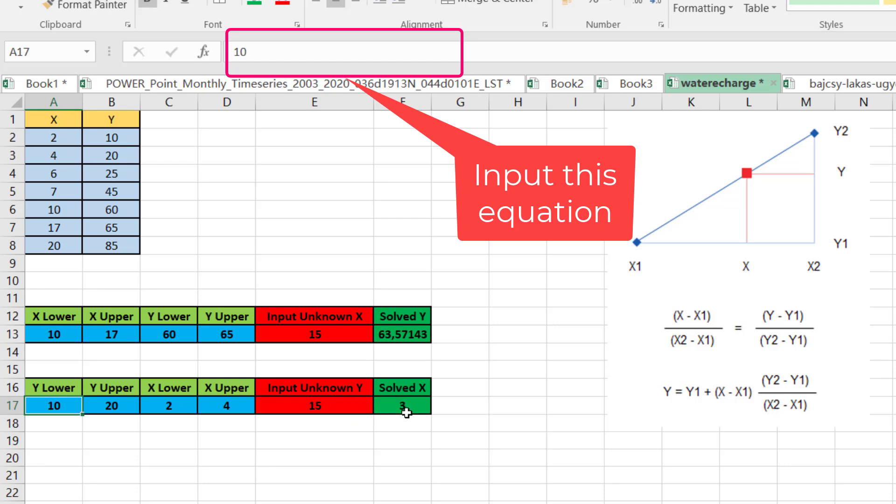For example, this time I put 65 as y lower, 85 as y upper, x lower belongs to 17, x upper is 20.